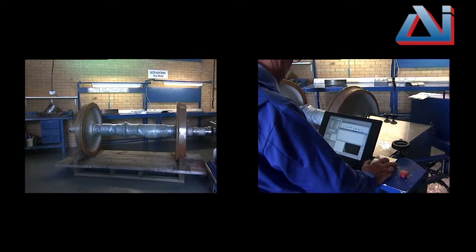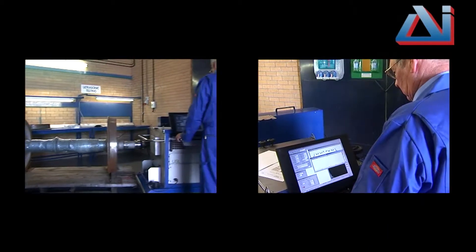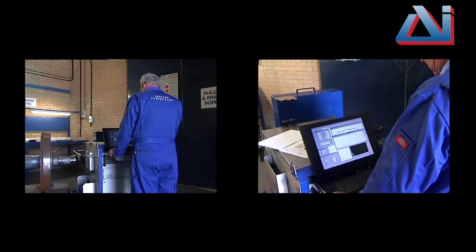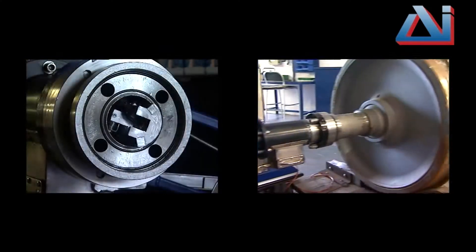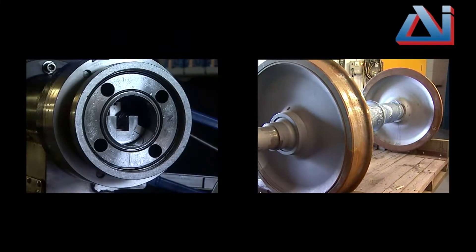The rail division of Applied Inspection Limited has the benefits of being able to offer complete project management of the customer's entire NDT requirement, including fleet checks, wheelset inspection, ultrasonic axle testing, hollow and solid axles, axle boxes, and bogie frame inspection.